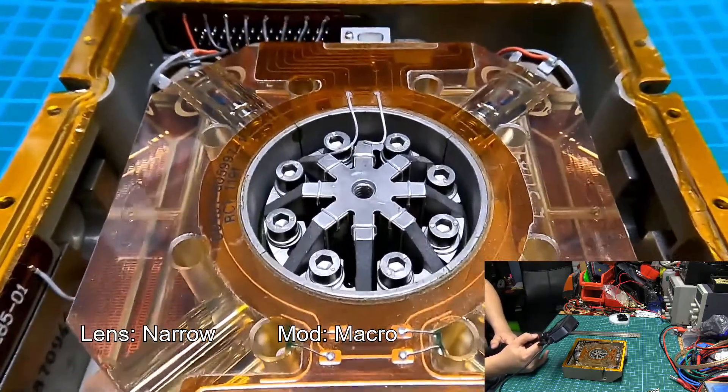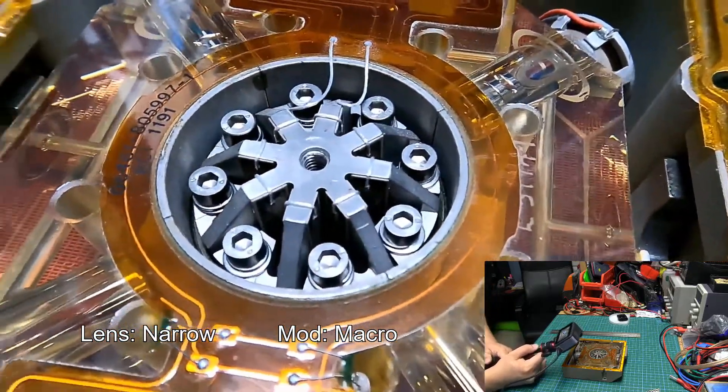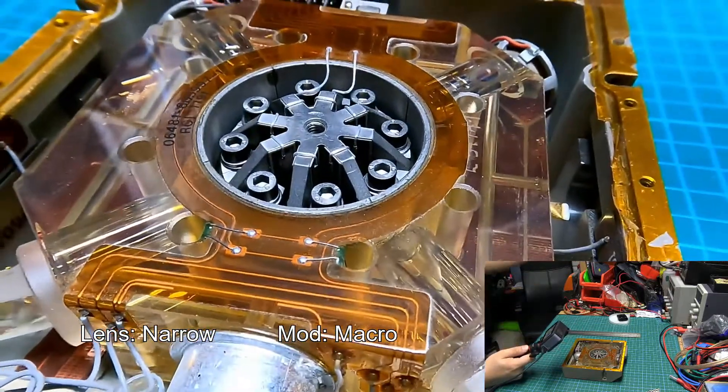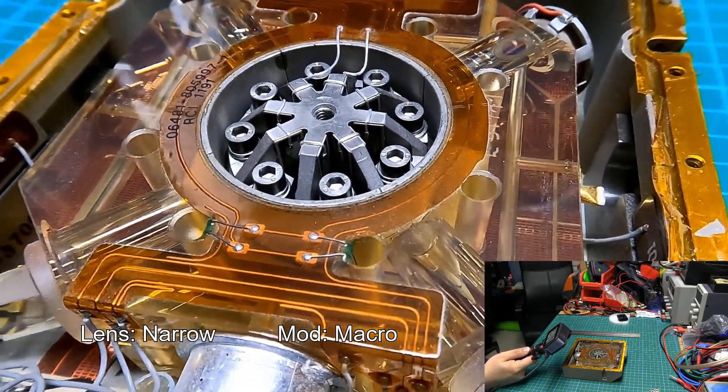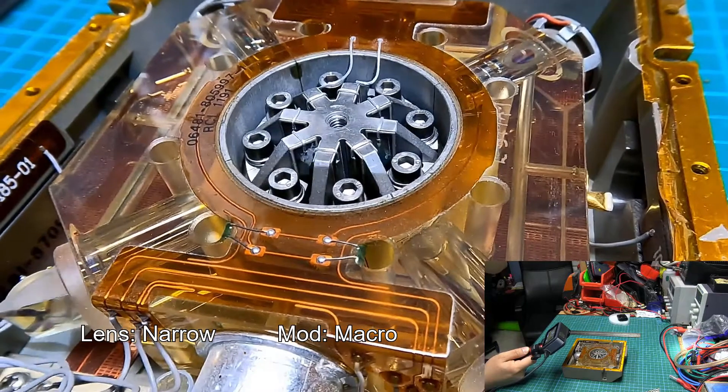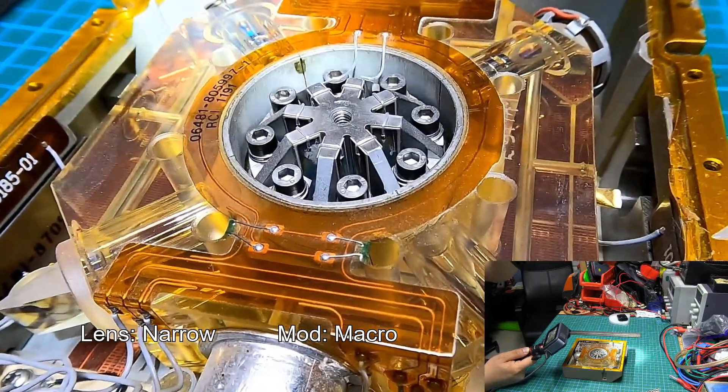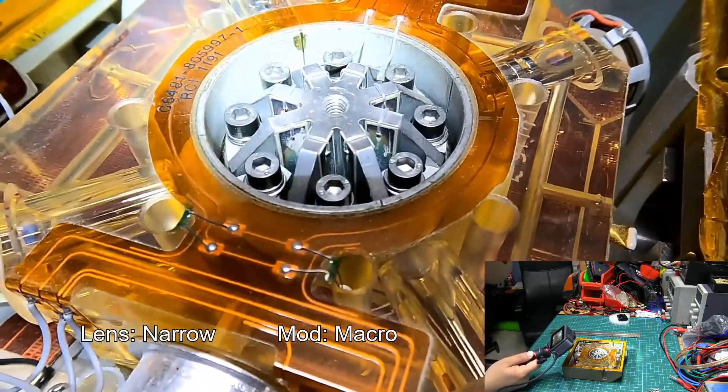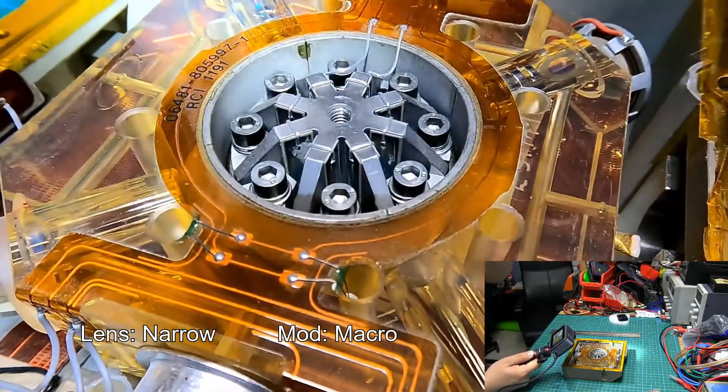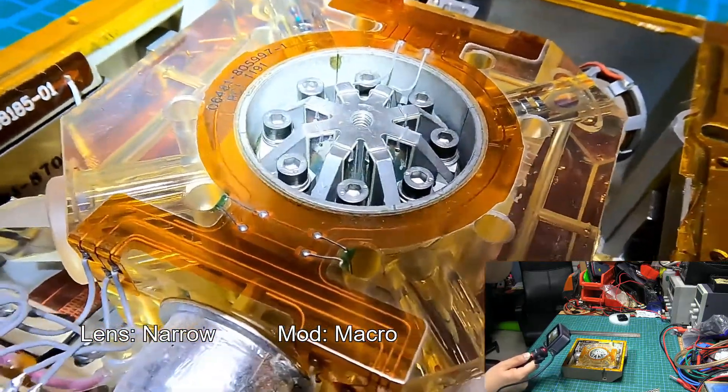So I can get some of the finer details that I wouldn't be able to see with the non-macro lens. With all of the fine details and the strong overhead light, I think I actually have to add a bit of fill light here with another flashlight just to capture some of those details in the center with the metal.